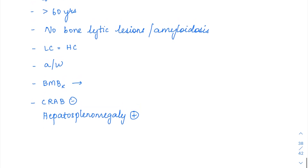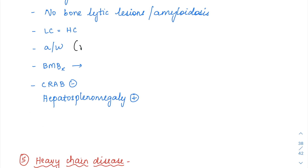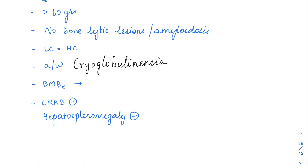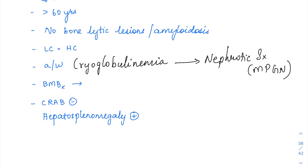Renal failure is not so common in Waldenstrom's macroglobulinemia, but it is associated with cryoglobulinemia — very important. IgM is associated with cryoglobulinemia, and when cryoglobulinemia is present, it can result in nephrotic syndrome, especially MPGN — membranoproliferative glomerulonephritis. So an MPGN type presentation can be seen in Waldenstrom's macroglobulinemia.